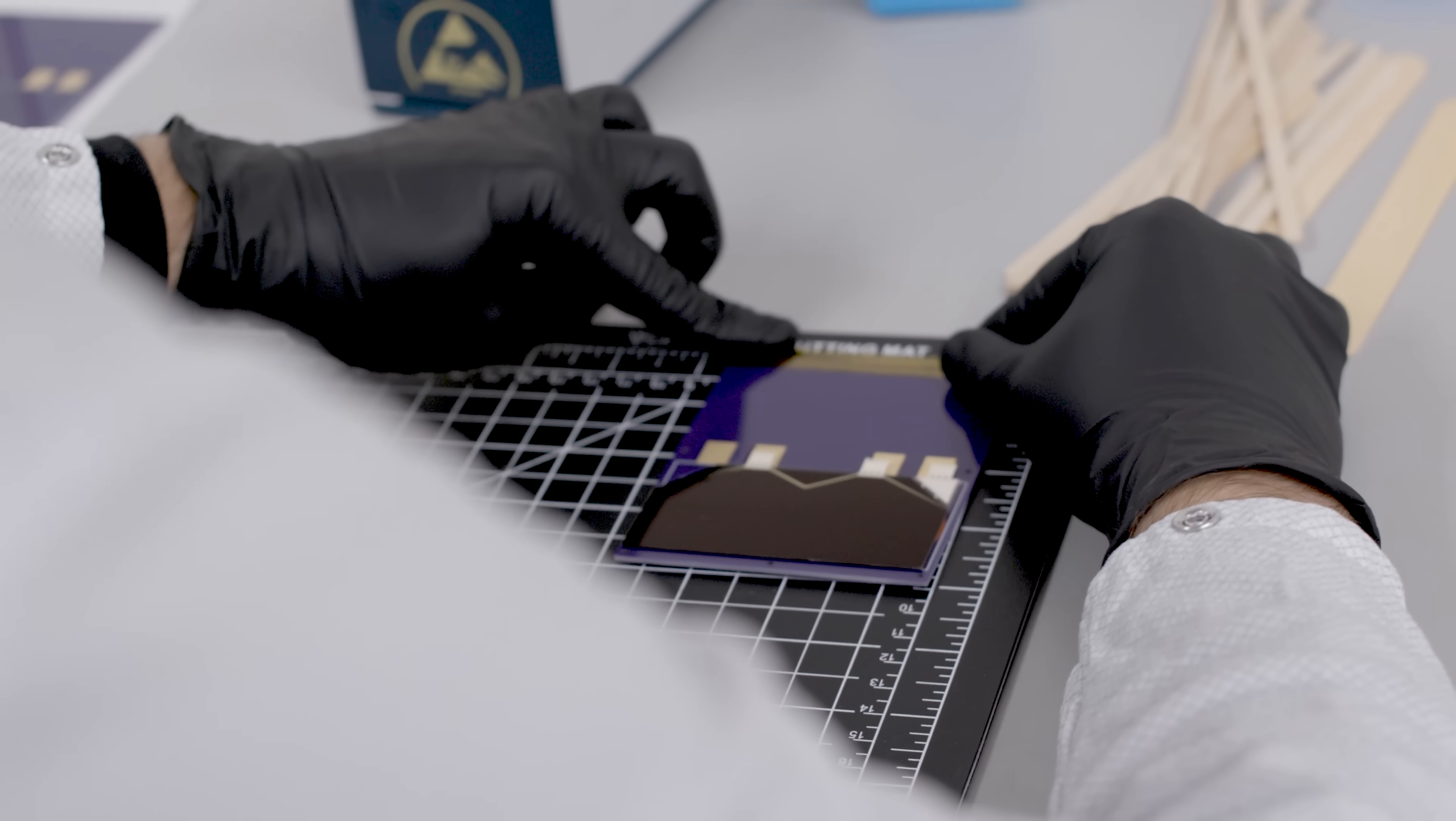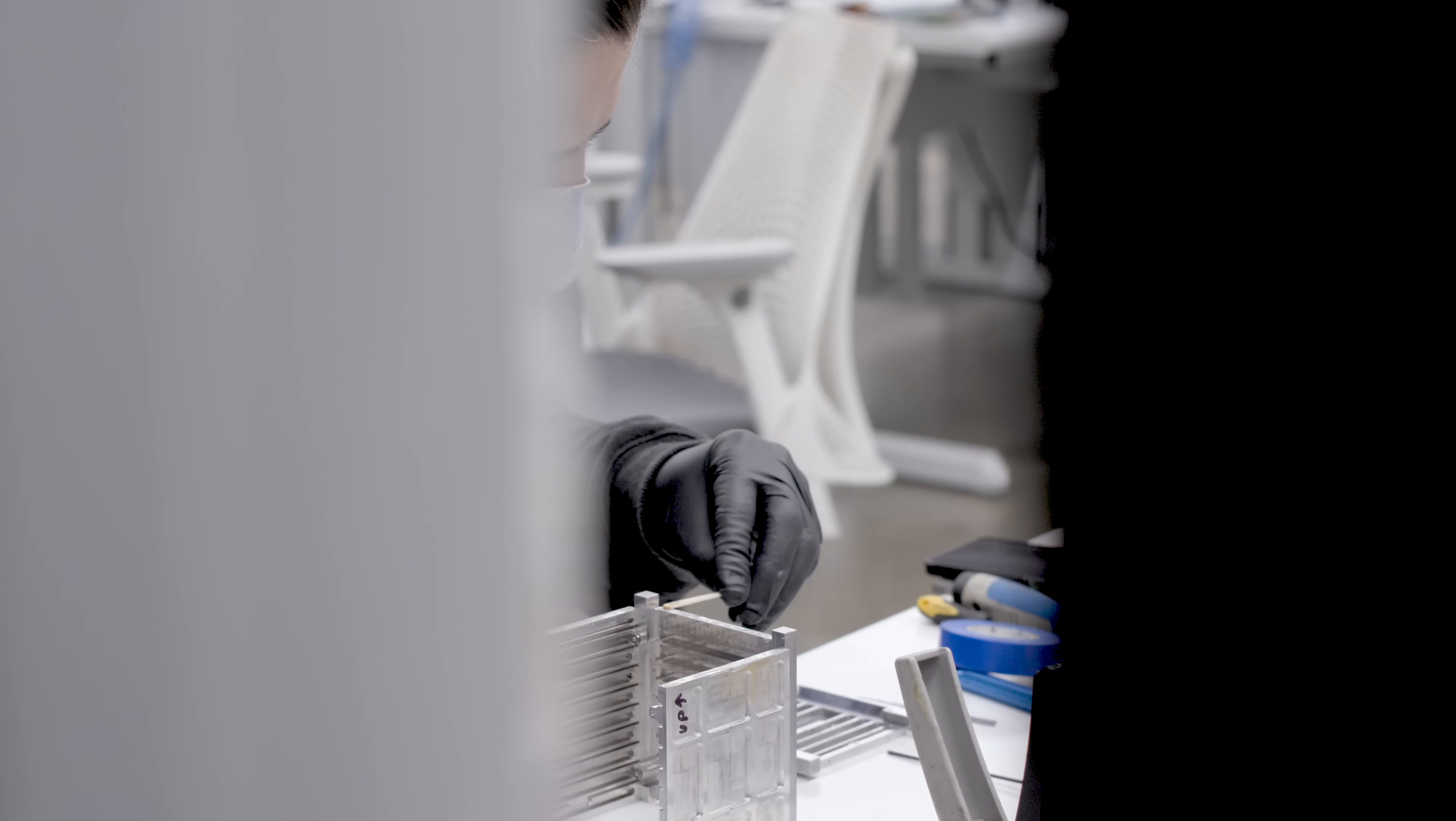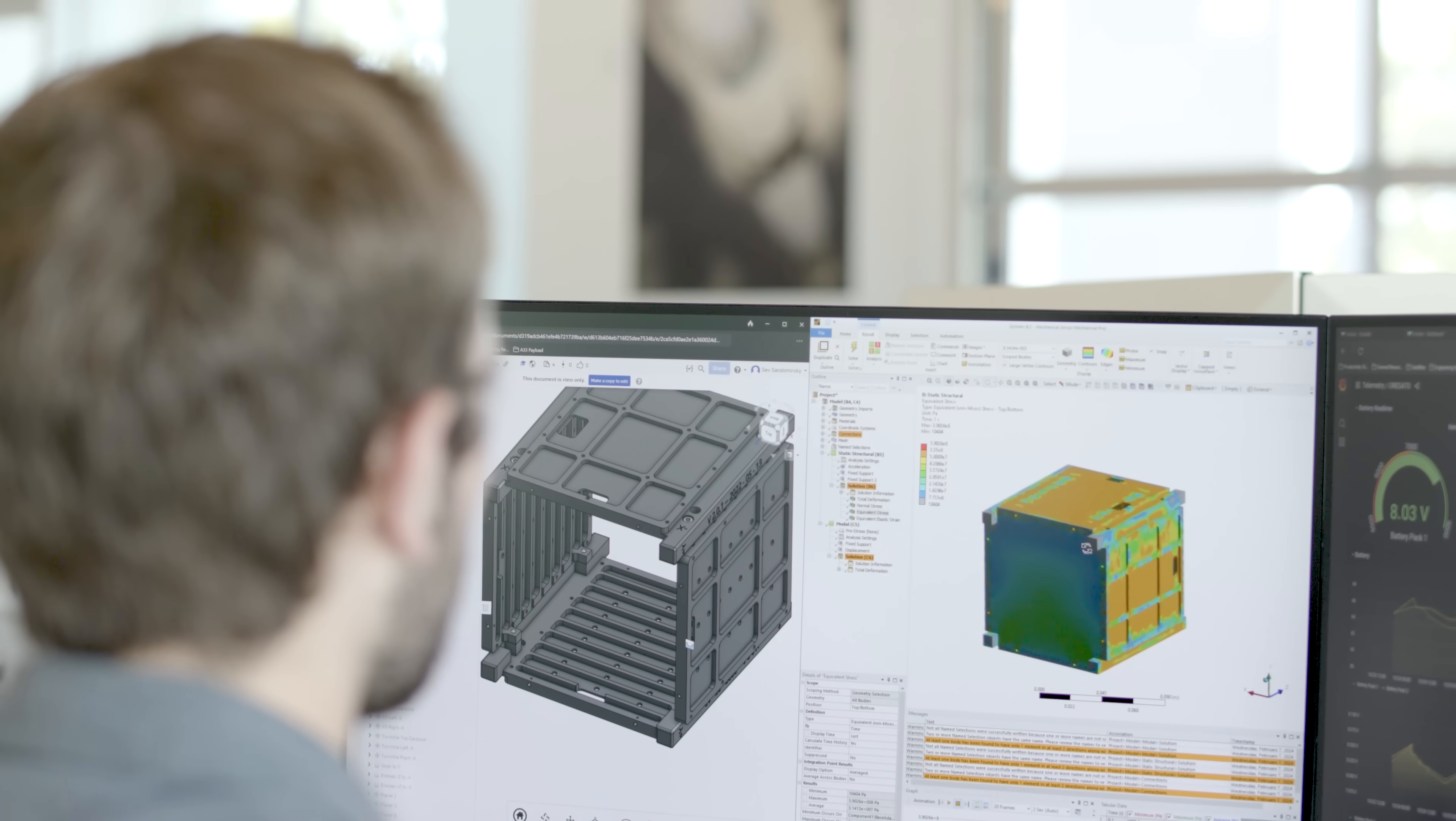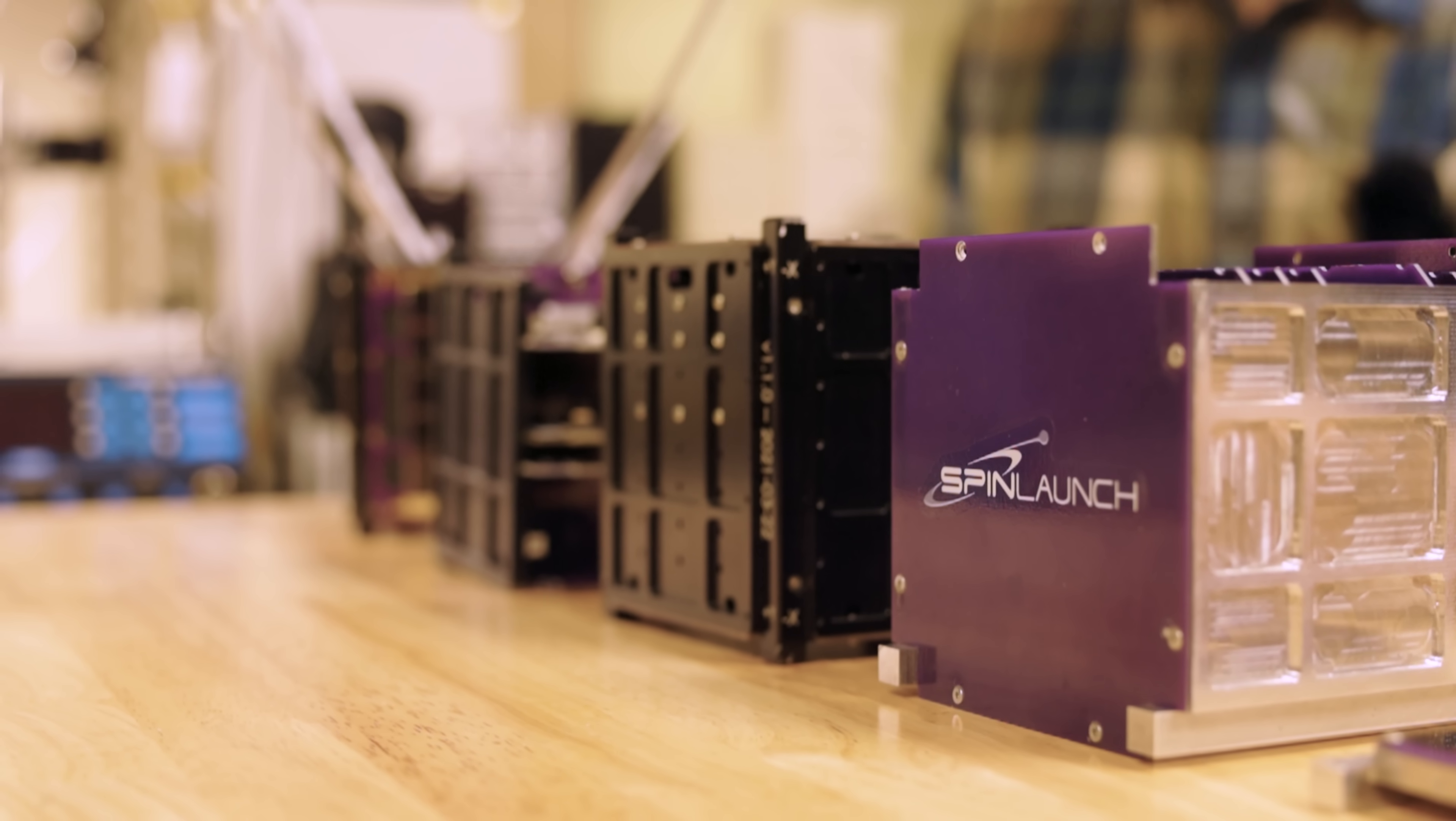The solar cells that we used are a little bit different than ORSATs. They're just a little bit bigger, but otherwise they're exactly the same. For the frame, we took ORSAT's open source design and we did our own analysis on it first before we manufactured it and built it to see if it would survive 10,000 Gs. And we found that it was pretty close as is.